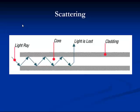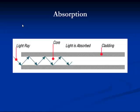Scattering is a property of glass that causes light to deflect from the fiber and contributes to optical attenuation. Some scattered light is reflected back toward the light source — a property used by the Optical Time Domain Reflectometer (OTDR) to test fiber optics. Absorption is the loss of light energy in an optical fiber resulting from impurities in the glass, accounting for 3 to 5% of fiber attenuation. It causes the light signal to be converted to vibrational energy or some other form of energy.